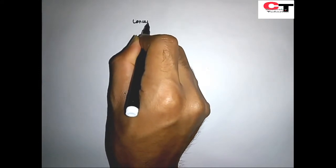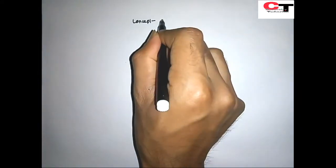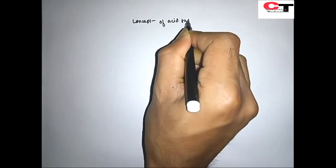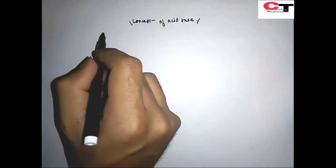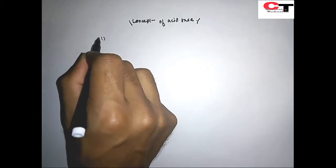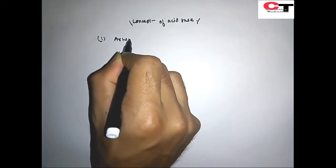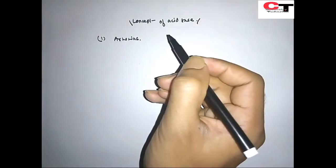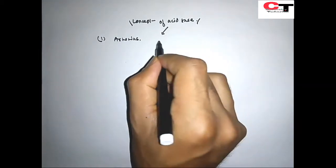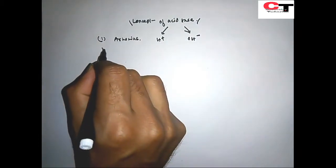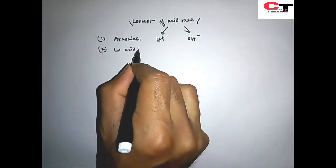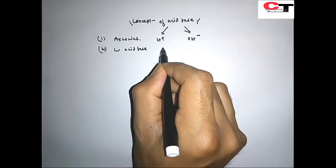In this video lecture we will discuss about a very important topic: the concept of acid and base. There are three concepts of acid-base. The first one is Arrhenius — according to Arrhenius, an acid is a proton donor and a base is a hydroxyl ion donor. The second one is Lewis acid-base concept — according to Lewis, an acid is an electron acceptor.